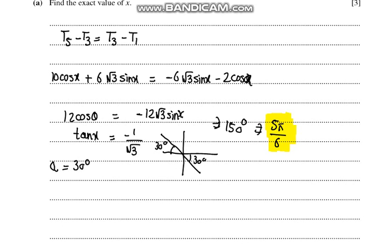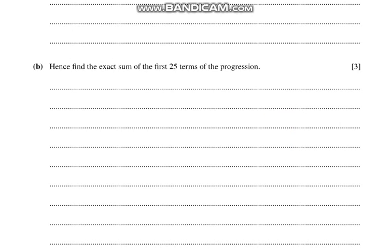So 150 degrees is the exact value of x, which could be written as 150 times π/180, which is 5π/6 in radians. Part b says hence find the exact sum of the first 25 terms of the progression. The sum of 25 terms, we have the formula n/2 times (2a + (n-1)d).